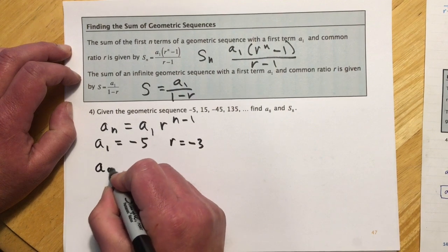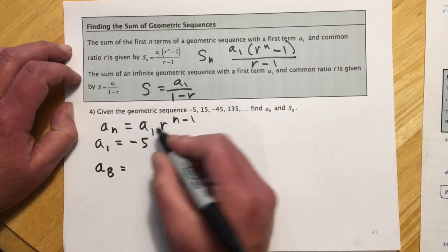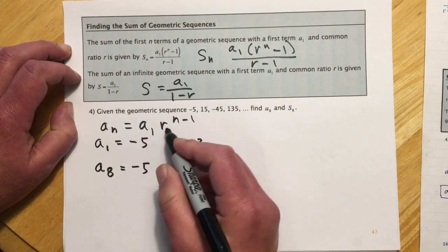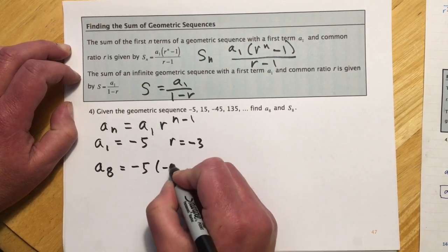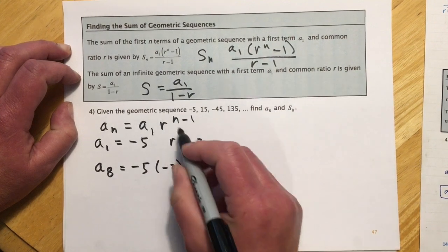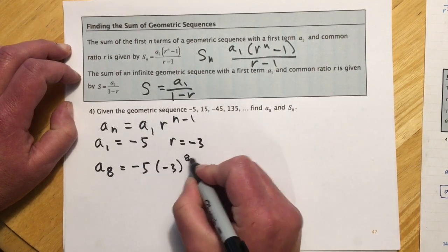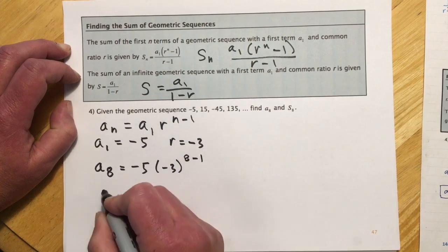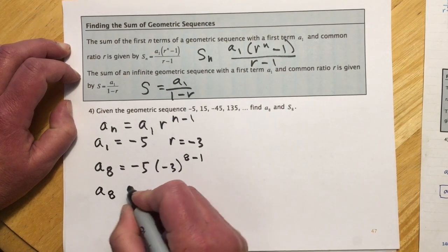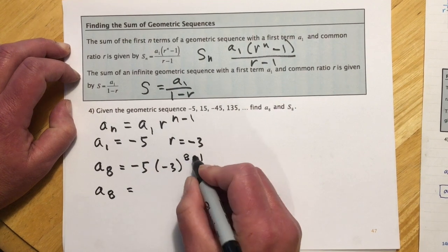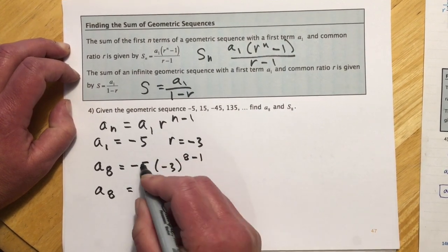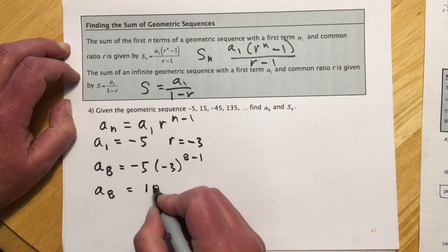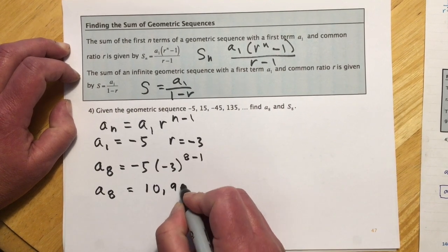So to find the eighth term, I would have a sub 8 equals the first term, which is negative 5, times the ratio, which is negative 3, raised to the n minus 1, so 8 minus 1. And so calculating that, this would be negative 3 to the seventh and then times negative 5. And that comes out to 10,935.